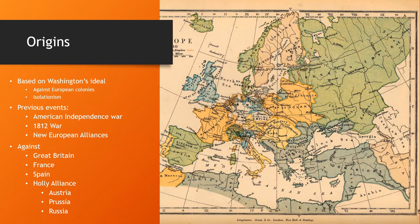The Napoleonic Wars created several alliances that stayed alive even after defeating Napoleon. The Monroe Doctrine was aimed at countries like Great Britain, Spain, France, and the Holy Alliance made by Austria, Prussia, and Russia.